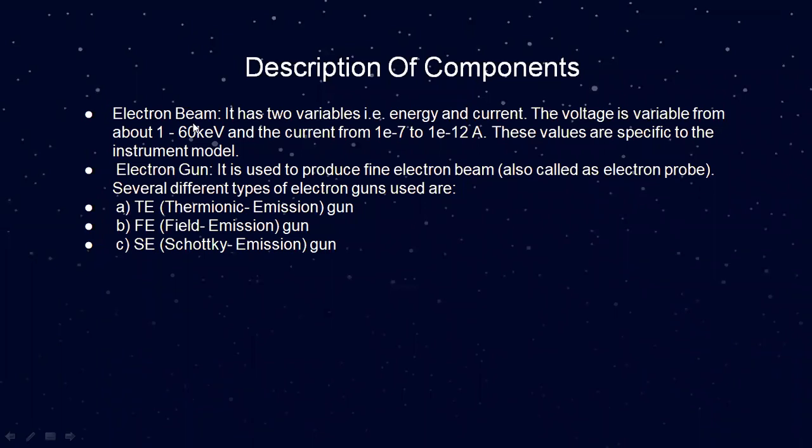The electron beam has two variable parameters: energy and current. The voltage is variable from about 1 to 60 kV and the current from 10⁻⁷ to 10⁻¹². These values are specific to the instrument model. The electron gun is used to produce the fine electron beam, also called an electron probe. Several different types of electron guns are used: thermionic emission gun, field emission gun, and Schottky emission gun.